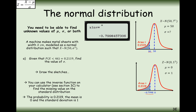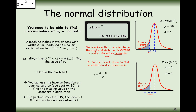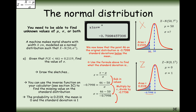Now we have corresponding markers on both distributions, we link them using Z equals X minus mu over sigma. Substituting the values: minus 0.7998 equals 46 minus 50 over sigma. We get a negative on both sides, so the standard deviation will be positive. The standard deviation is 5.00 to three significant figures.